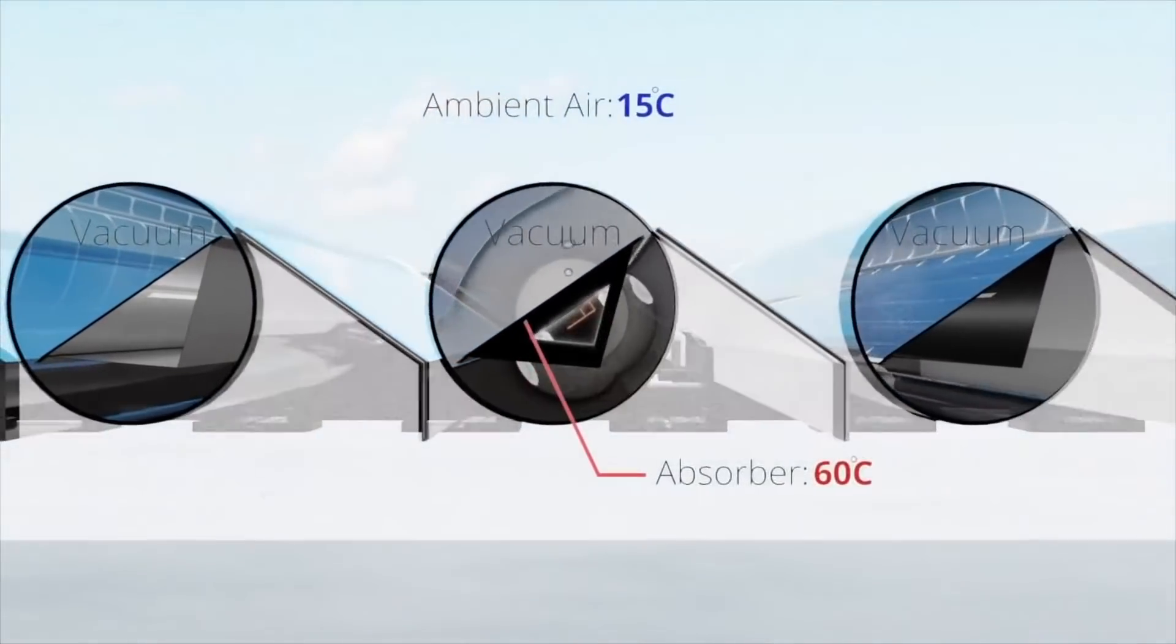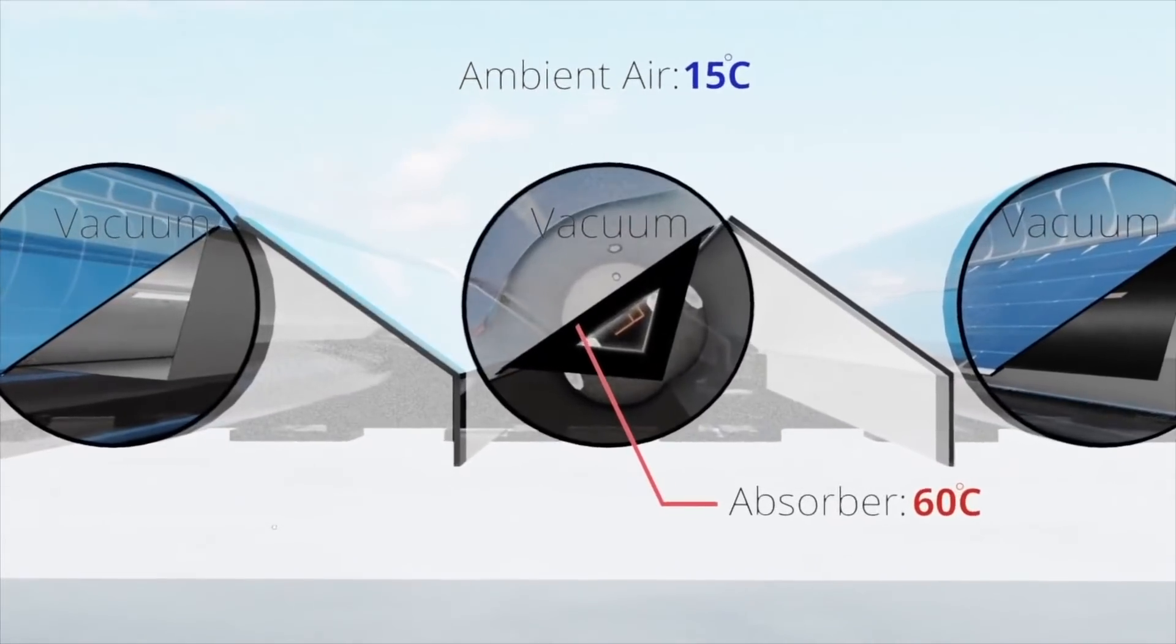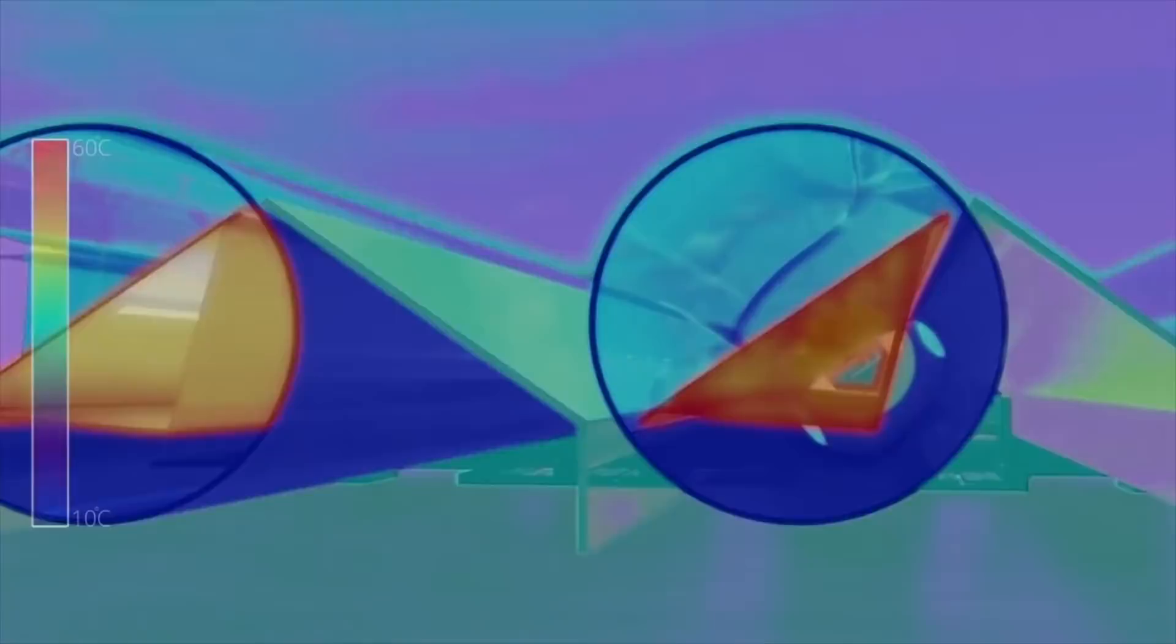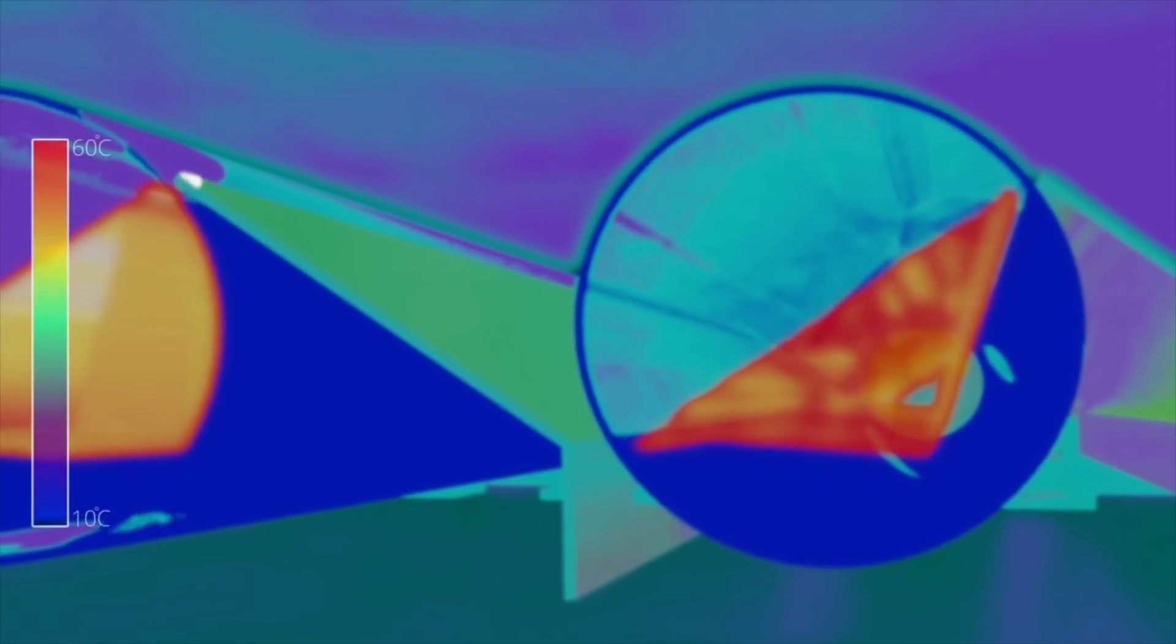The vacuum inside the tube dramatically reduces thermal losses, enabling Virtue to deliver higher temperature outputs for hot water and processed heat, even in colder climates.